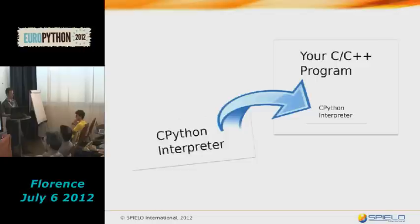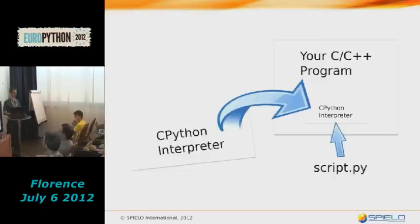In a nutshell, this is what embedding a Python interpreter looks like. You take the Python interpreter — CPython in our case — and put it inside your existing C++ program, just like you would use any other utility library, like XPath for XML parsing. You put in the CPython interpreter to run Python code for you. That's the simple concept.